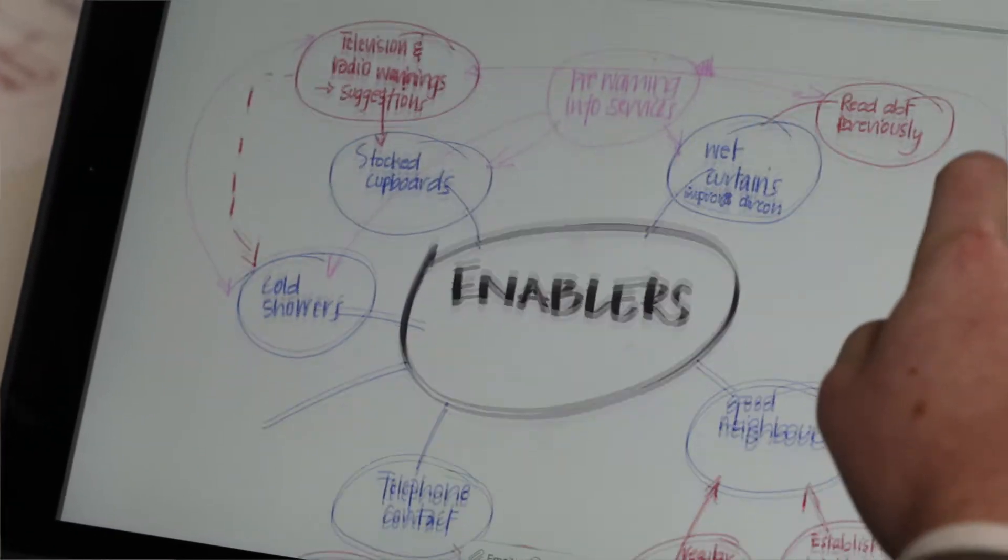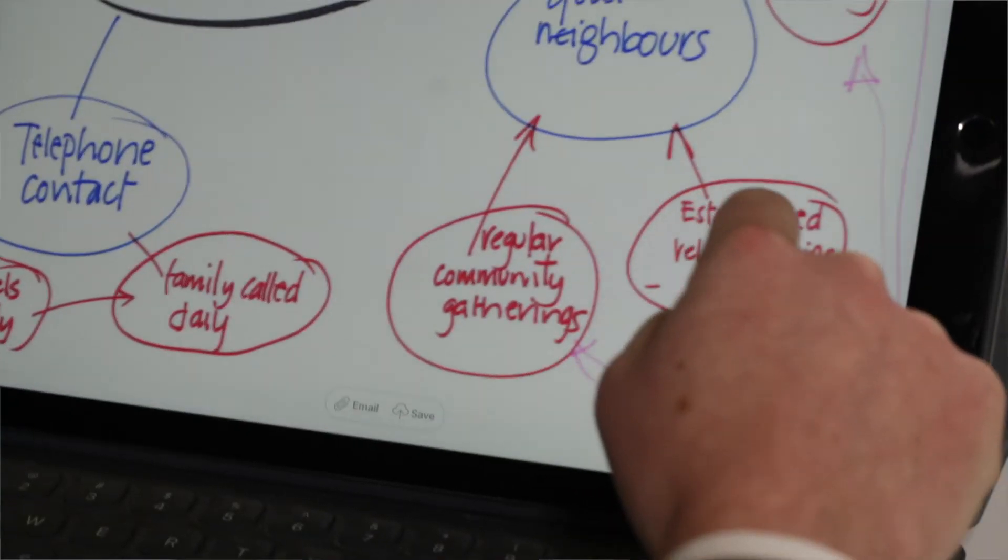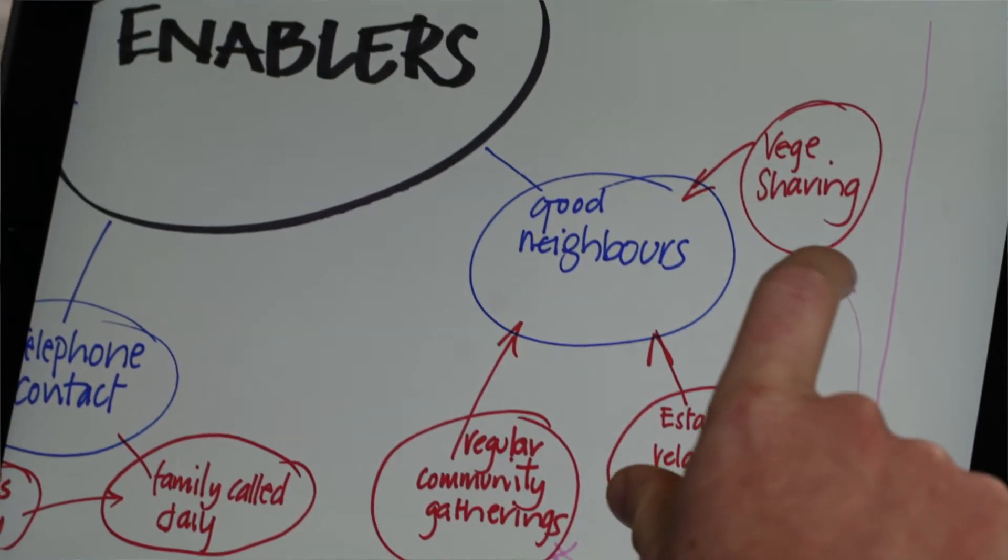As a flip side, we can look at the enablers or the things that help, like social capital, friendly neighbours, or access to a car.